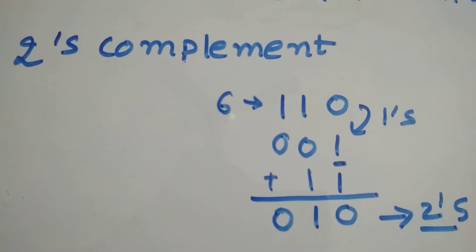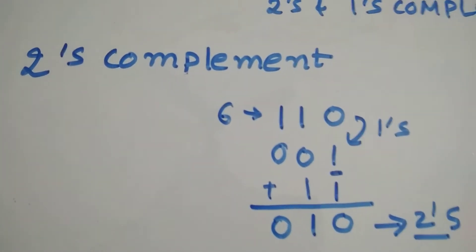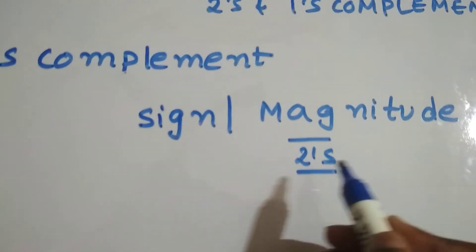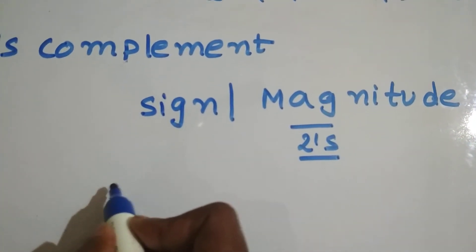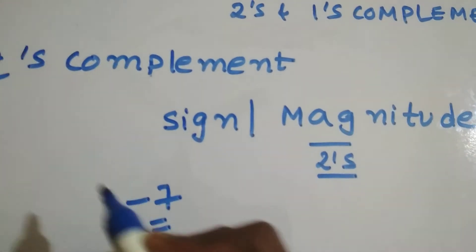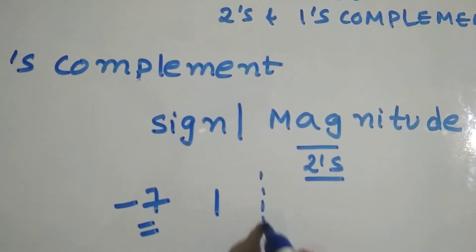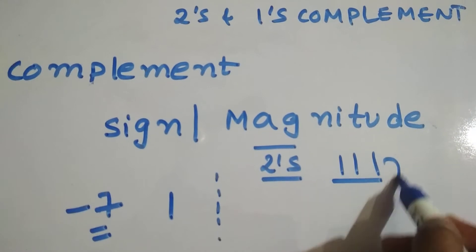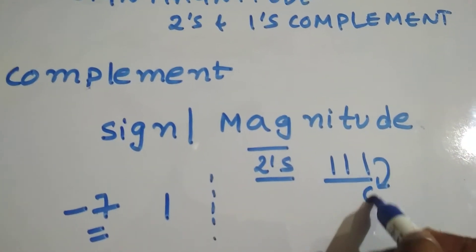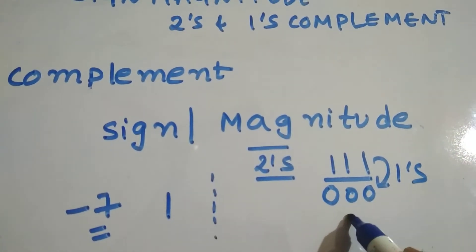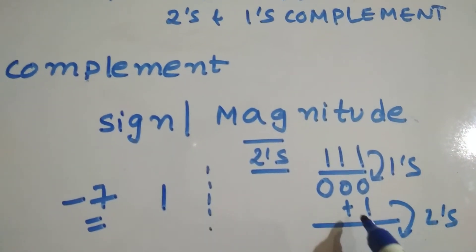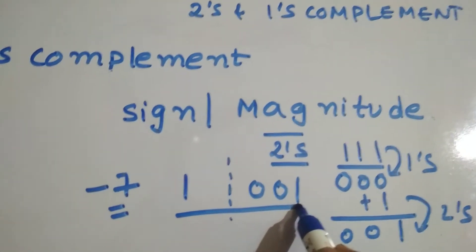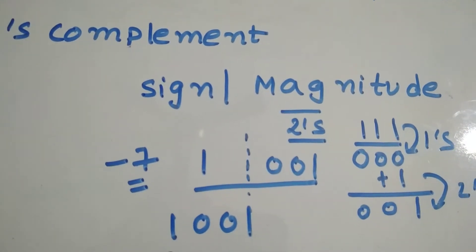Now let's look at how a signed binary number is represented in two's complement form. Again we have sign and magnitude, where the magnitude is represented in two's complement. For minus 7: the sign is 1. The magnitude 7 is 1 1 1 in binary. One's complement of 1 1 1 is 0 0 0, then add 1 at LSB to get 0 0 1. So minus 7 in two's complement is 1 0 0 1.